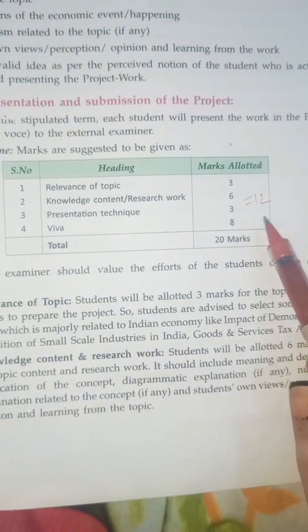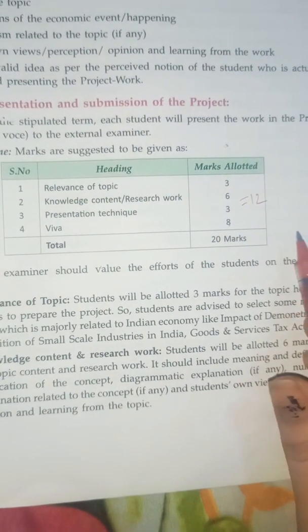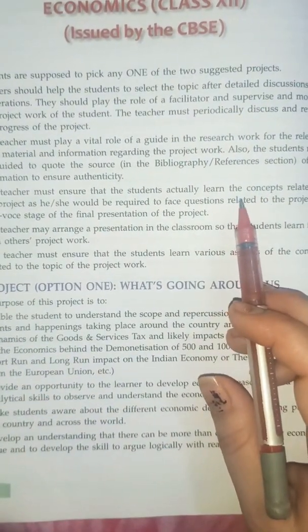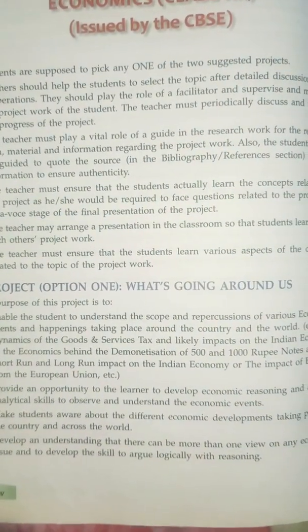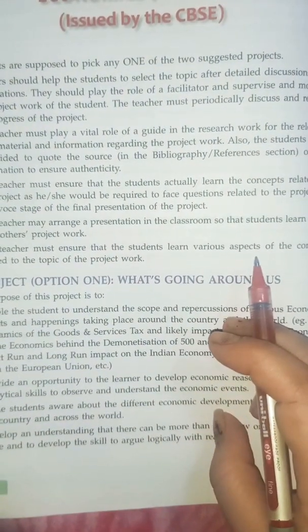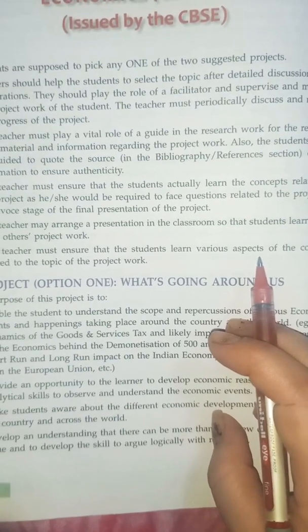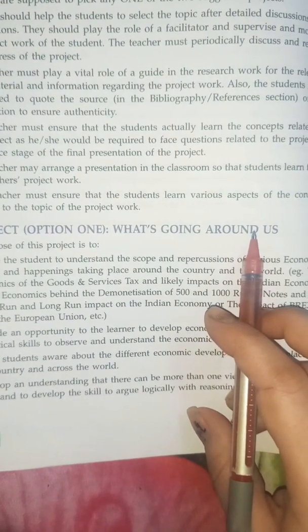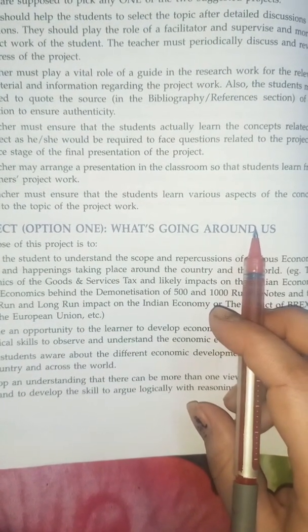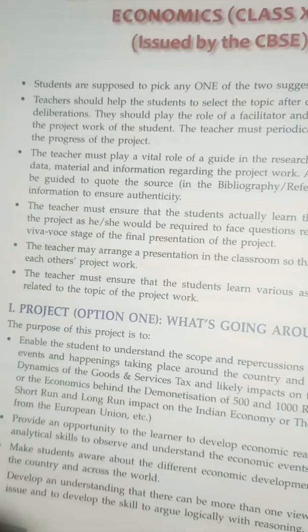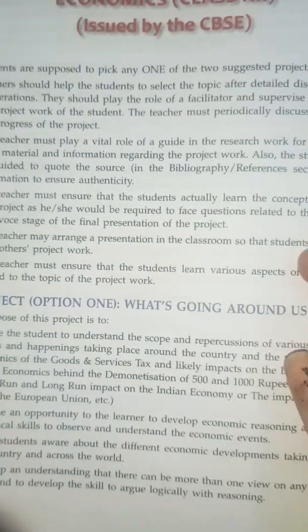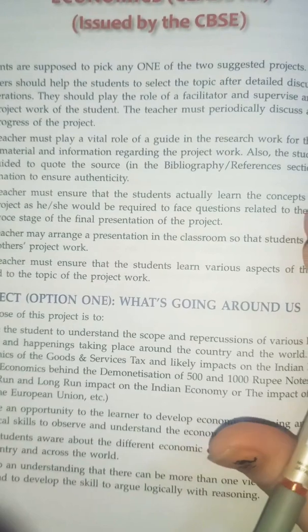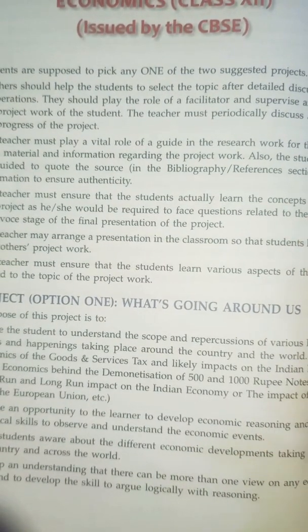Now we will discuss how to score 12 out of 12. How do you select a topic? In the CBSE guidelines, you have two choices. The first choice is that you can take any topic from the book. The second choice is that you collect a topic from what is going on around us — any current economic topic, even if it is not in the book. For example, you can take the impact on the Indian economy as a topic.